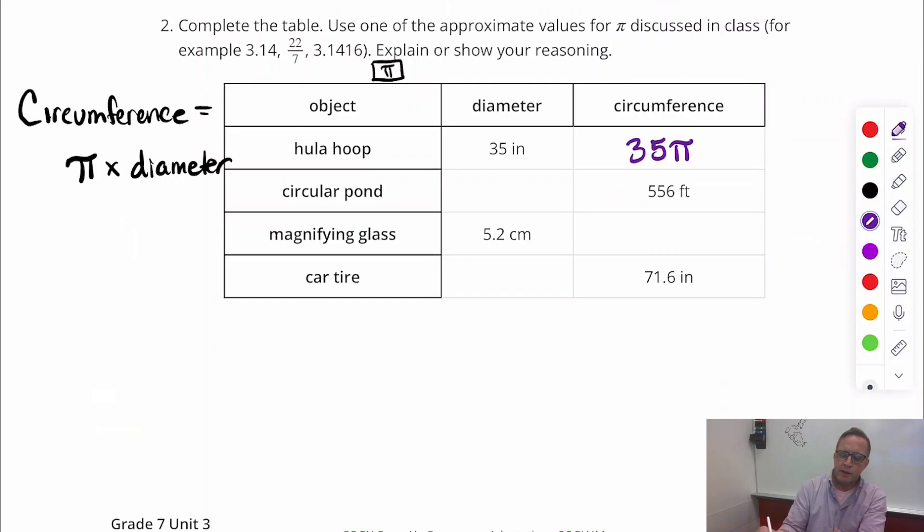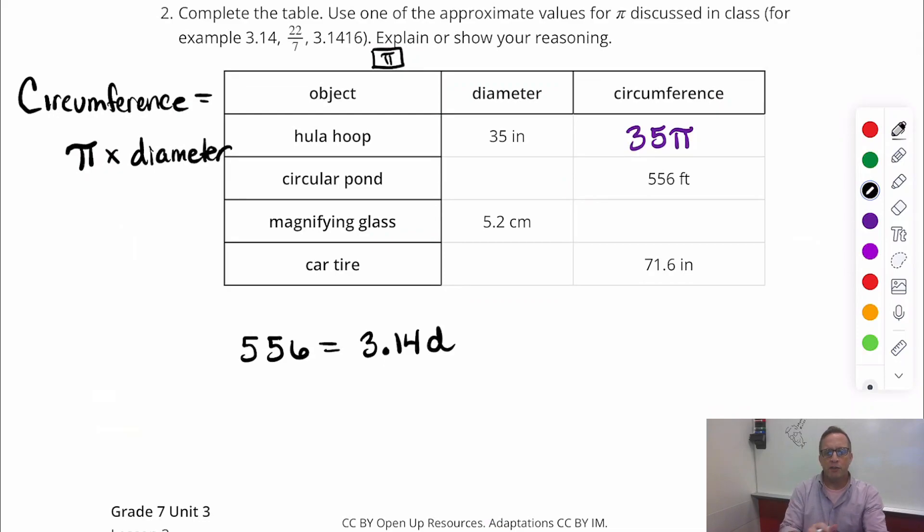Alright. Now, for the circular pond, we've got 556. And that's the circumference. So I'm going to write this like an equation. I'm going to do 556 equals pi times diameter. So 3.14 times some number is 556. So this one is asking us to divide. So 556 divided by 3.14. And when I do that, I get 177. And I'm rounding, by the way. So it's about 177. And that's feet. I should have wrote inches on this one, by the way.